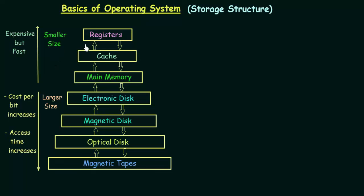Registers are the smallest in size but their access time is the fastest. As you go down the hierarchy, the cost per bit increases, the access time increases, and their size also increases. So if you want small size and fast access, go to the top; if you want bigger size for storing more data, go down to electronic disk, magnetic disk, optical disk, and magnetic tapes.